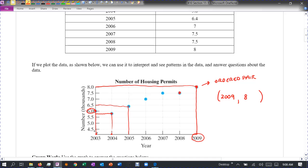And each of these points can be represented as an ordered pair. So this would be 2008. And what was it here? 7.5. So 7.5. So each of these points represents an ordered pair in this chart.